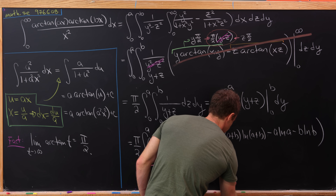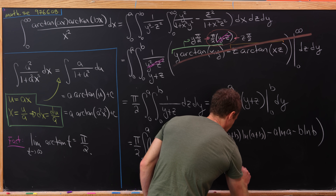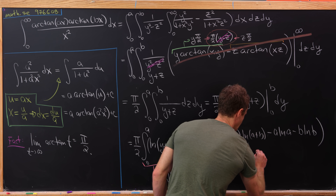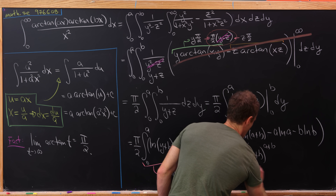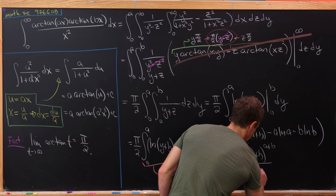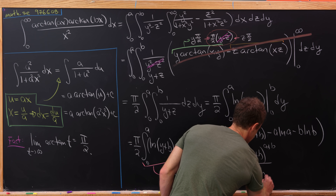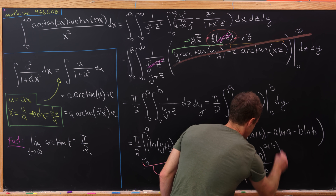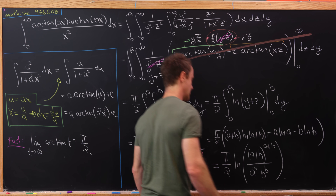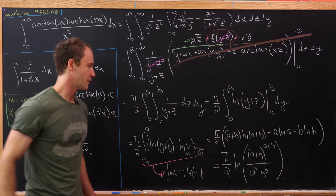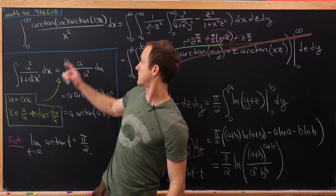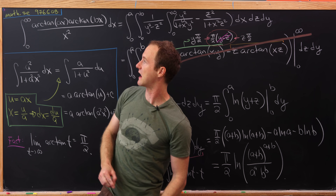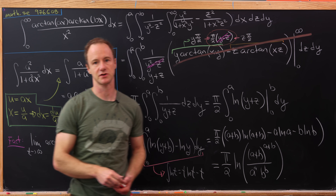So we'll have pi over 2 times the natural log of (a plus b) to the (a plus b) over (a to the a times b to the b). And there we have it — we found this nice version of the value of this integral. That's a good place to stop.